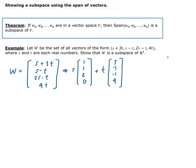So now we wrote W as a linear combination of two vectors, in particular V1, and we can call this V2.